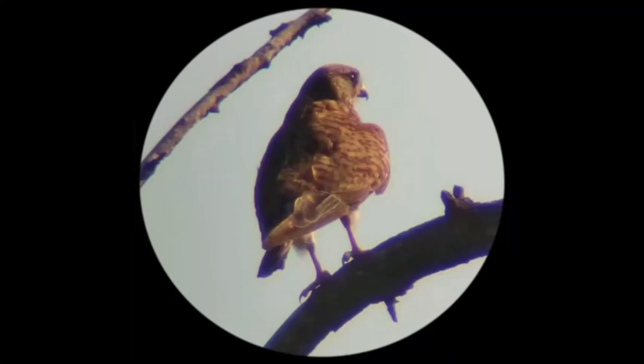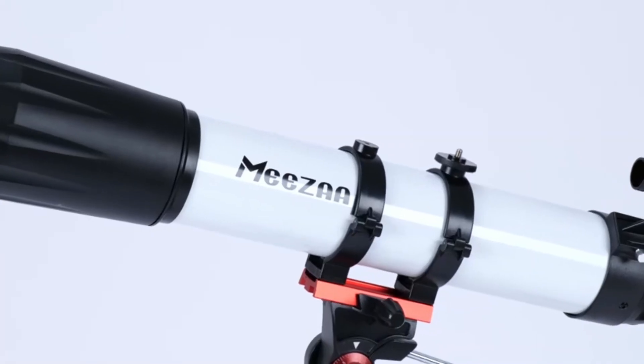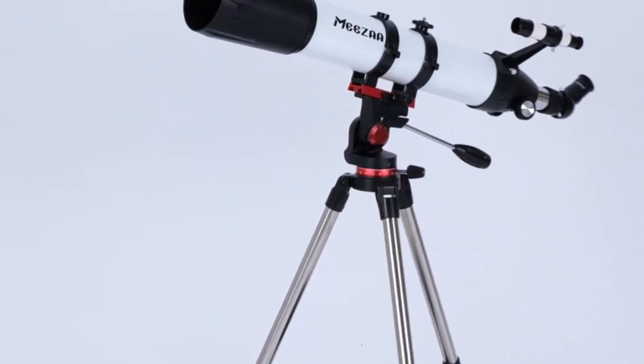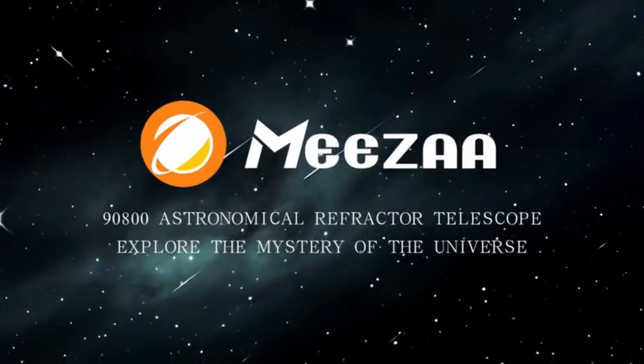Convenient accessories come with an adjustable stainless steel tripod, enabling various observation angles. All accessories can be packed into the carry bag for easy carrying and storage. The phone adapter can take amazing photos through your phone.